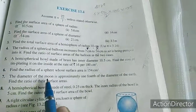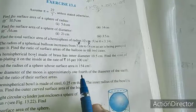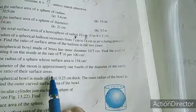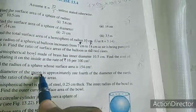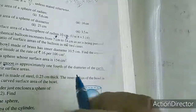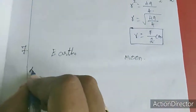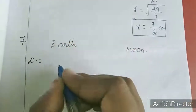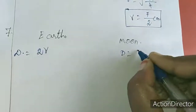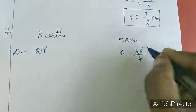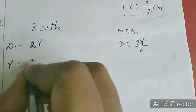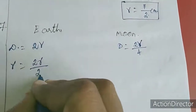Seventh sum: The diameter of the moon is approximately one fourth of the diameter of the earth. Find the ratio of their surface areas. Let the diameter of the earth be 2r, so the diameter of the moon is 2r/4. The radius of the moon is therefore r/4.